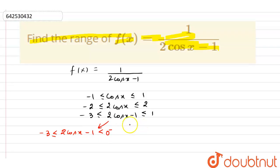For the second part, 2 cos x minus 1 will belong to 0 plus to 1. I have broken this into two parts: from minus 3 to 0 negative and from 0 positive to 1.